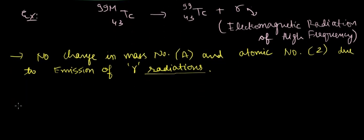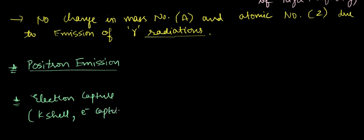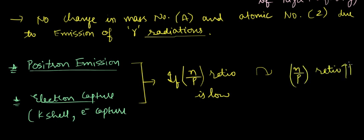Next let us see positron emission and electron capture. For both of these, the condition in which they occur is if the n/p ratio is low. Then the emission of these particles takes place and we get a higher n/p ratio than the original one.